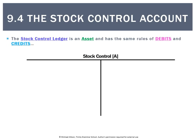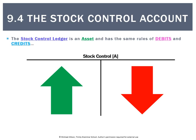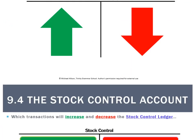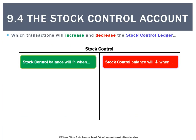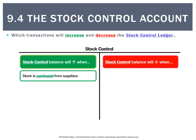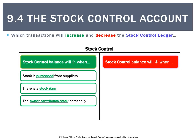Stock control is still an asset, so it still has the same rules of debits and credits — when it goes up, that's a debit, and when it goes down, that's a credit. Transactions that increase stock control include buying stock from suppliers, and there's also a stock gain, which we'll learn about later.